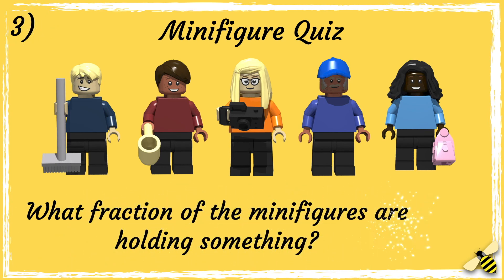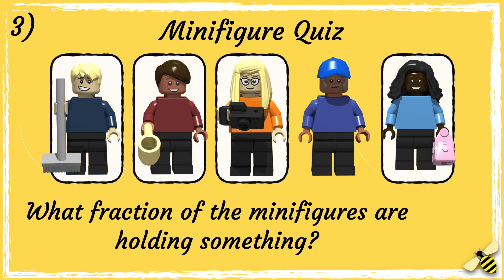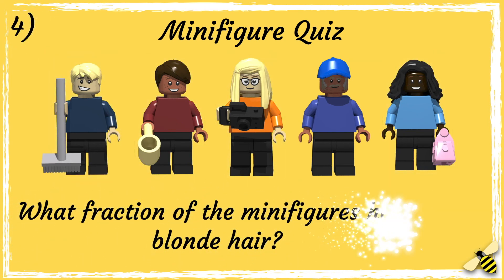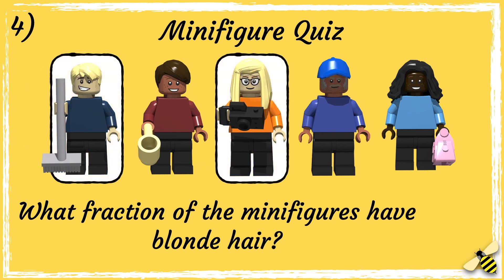Question three said: what fraction of the minifigures are holding something? Four minifigures are holding something, so the answer is four fifths. Question four said: what fraction of the minifigures have blonde hair? Two minifigures have blonde hair, so the answer is two fifths.